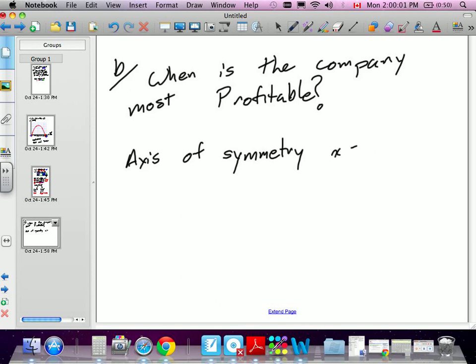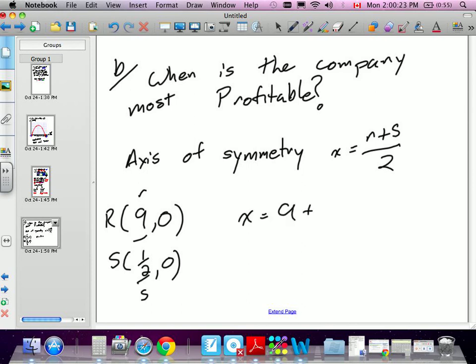Our r is our first x-intercept, which is 9 and 0. We'll call that r, and we'll call s our half and 0. So we're going to plug this value in for r and this one for s. When we put it into our formula, we get 9 plus 0.5. We're just going to do it with our whole numbers, not thousands right now.